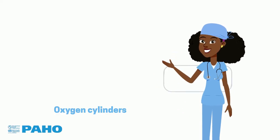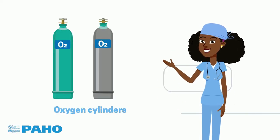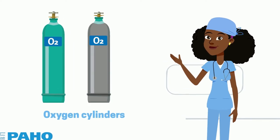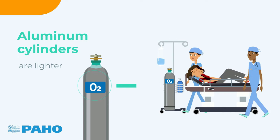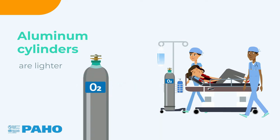Oxygen cylinders available on the market are made either of steel or aluminum. Aluminum cylinders are lighter and are generally useful when transporting patients inside or outside of the hospital. The choice of material is important information that should be included in your purchase order.